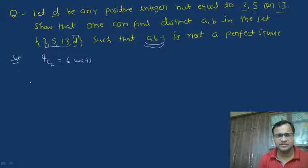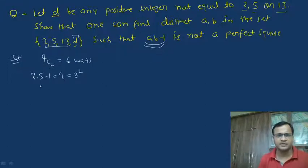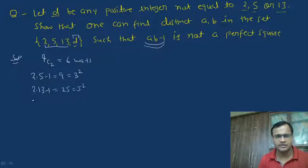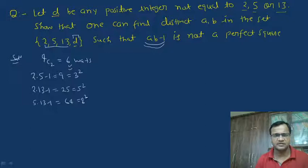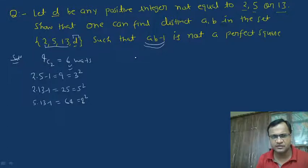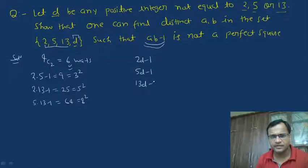If we take a as 2 and b as 5, then 2 × 5 − 1 = 9, which is clearly a perfect square. If we take a as 2 and b as 13, then 2 × 13 − 1 = 25, which is again a perfect square. And if we take a as 5 and b as 13, then 5 × 13 − 1 = 64, which is again a perfect square. So three combinations out of 6 are perfect squares.